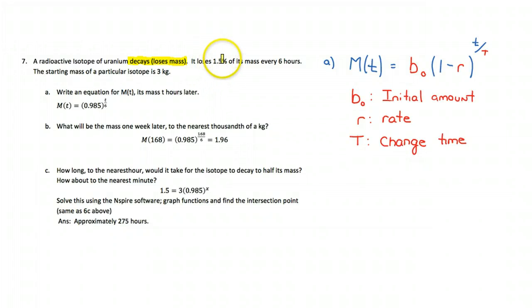It loses 1.5%, so that's an important value there, of its mass every six hours, so that's an important idea. And the starting mass of a particular isotope is three kilograms.